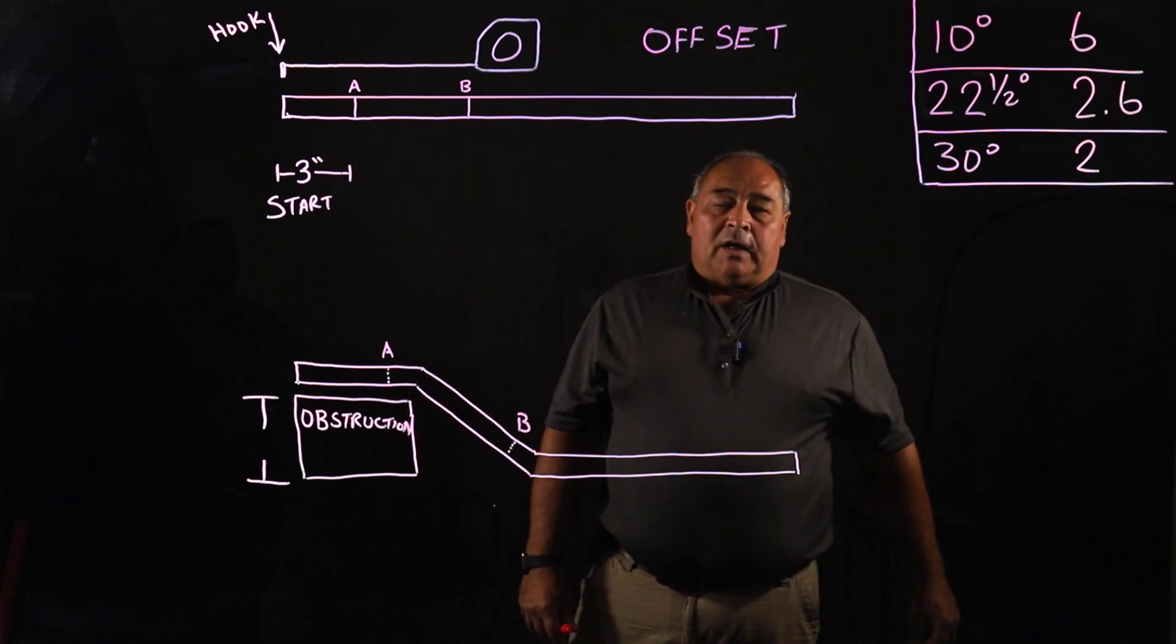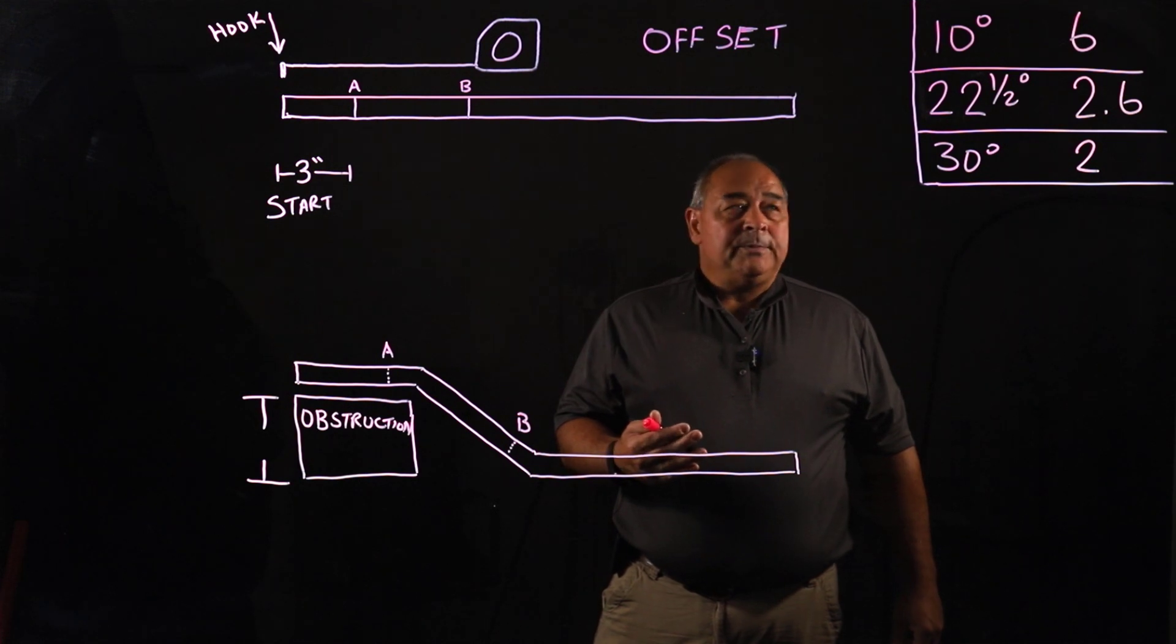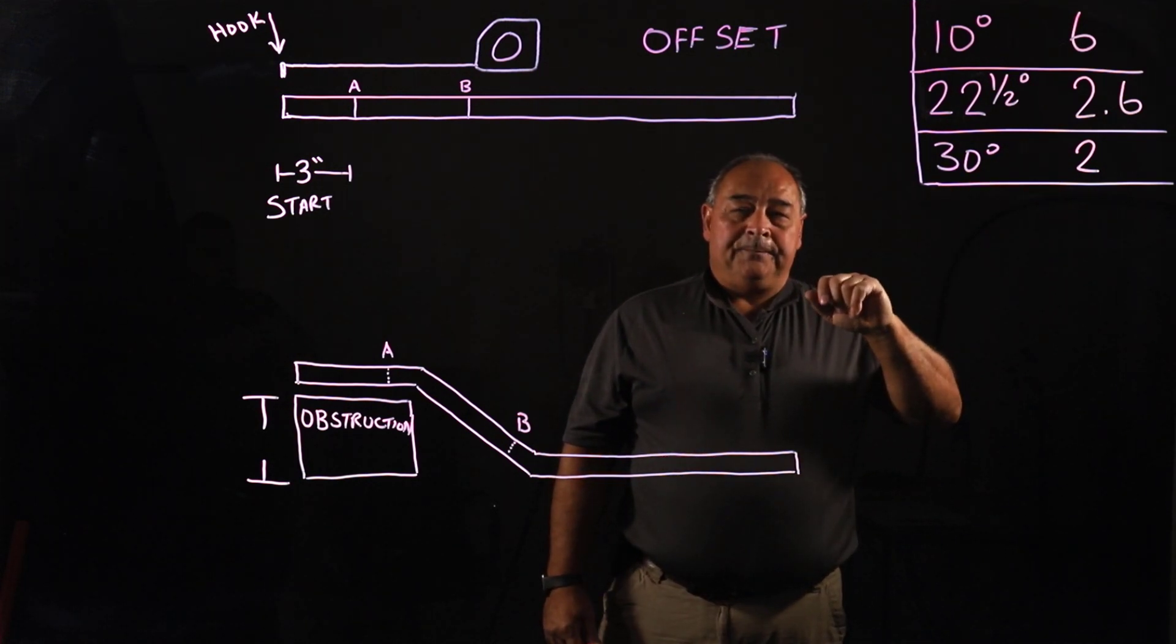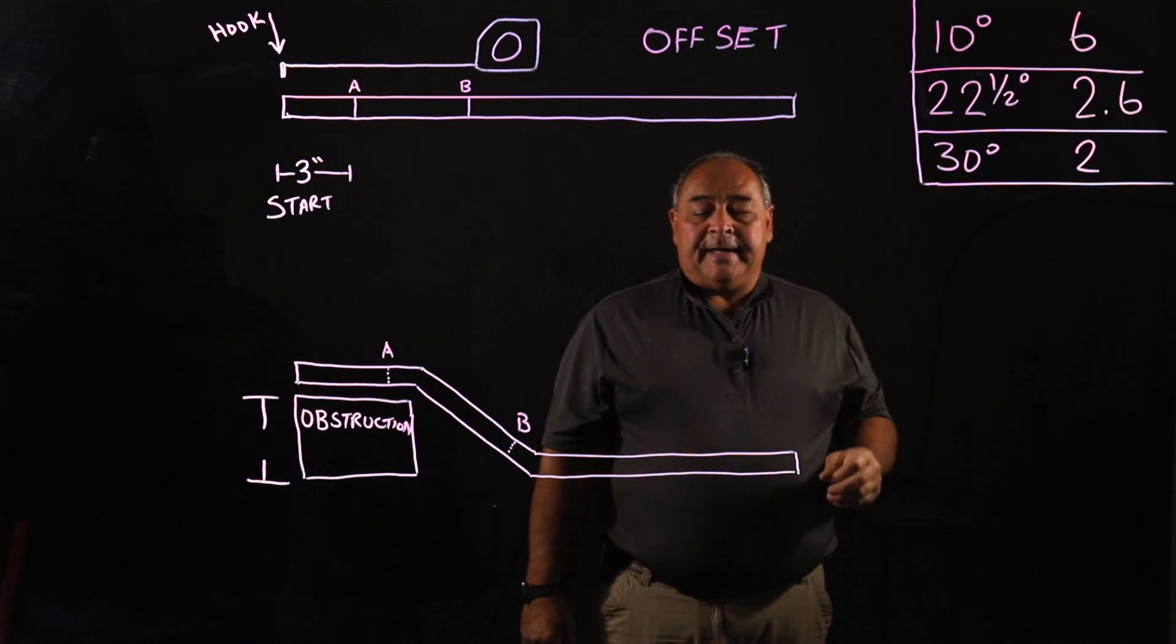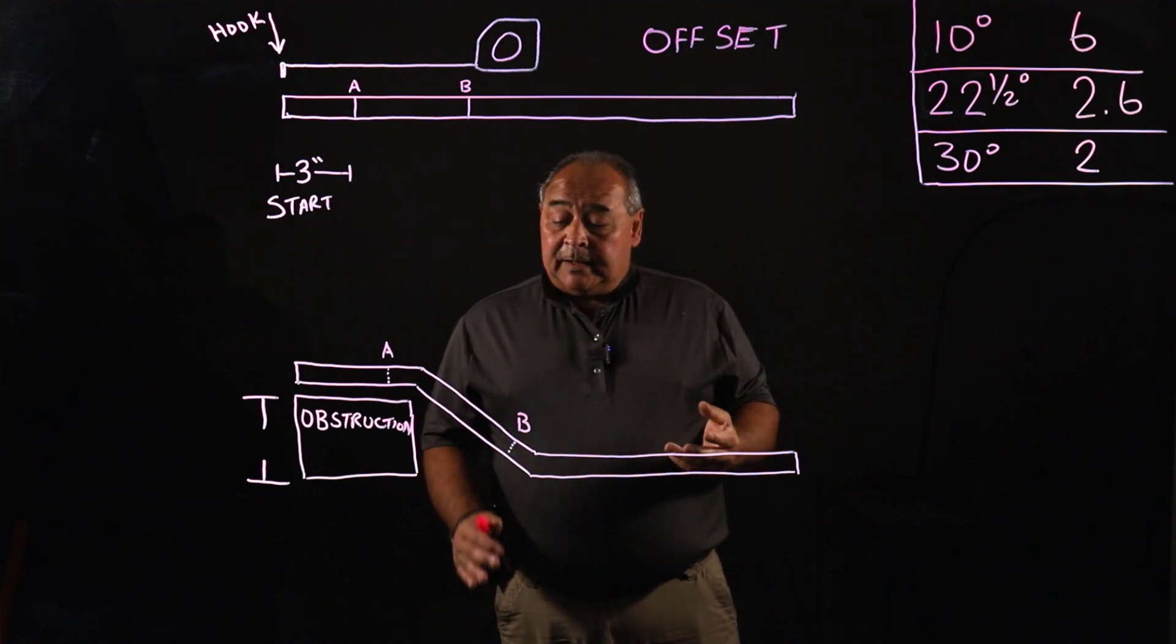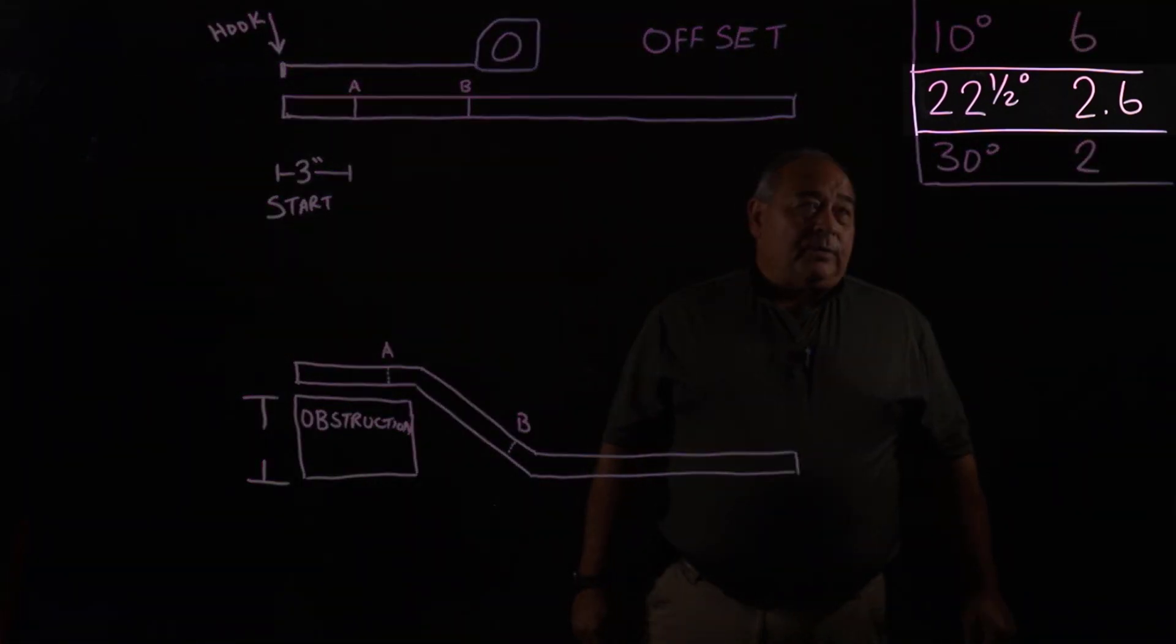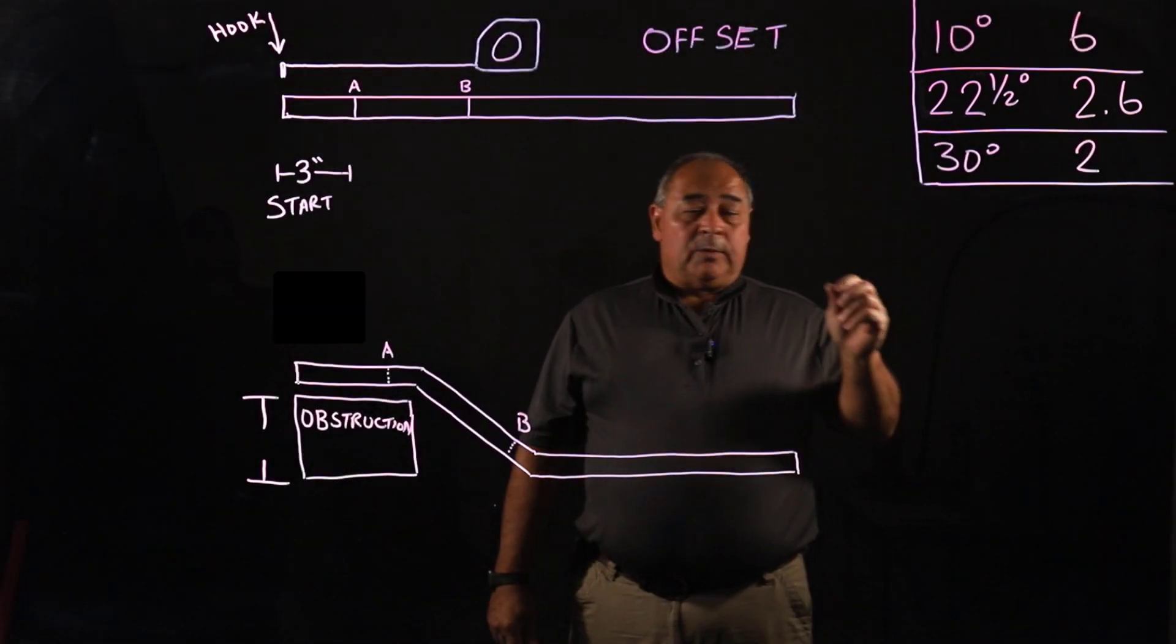Our 22 and a half is kind of an oddball. If we're going to 22 and a half, most people would rather just go to a 30. There's a reason for 22 and a half for some certain purposes, depending on your design and your wishes. But your multiplier for a 22 and a half would be 2.6.